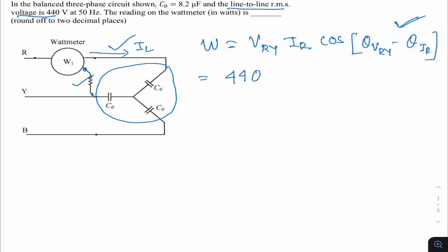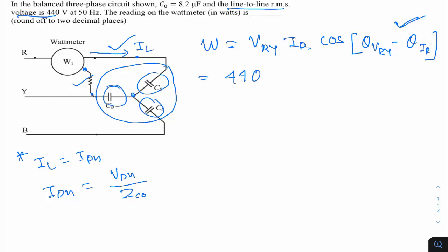For a star-connected load, I_line = I_phase. The phase current I_phase = V_phase / Z_C₀. Phase voltage V_phase = V_line / √3 = 440/√3. The impedance Z_C₀ = 1/(jωC₀), where ω = 2π × 50 and C₀ = 8.2 × 10⁻⁶ F.